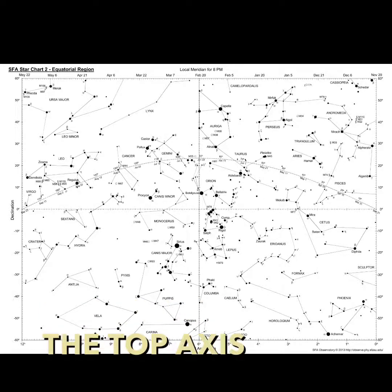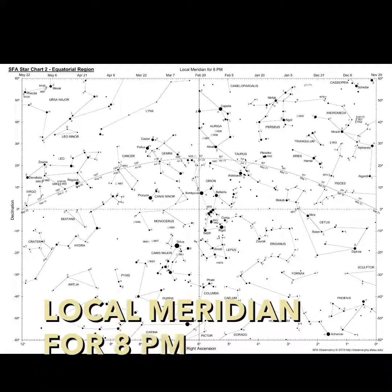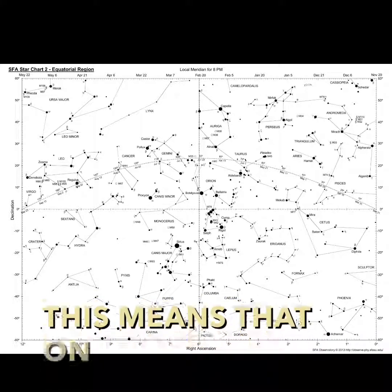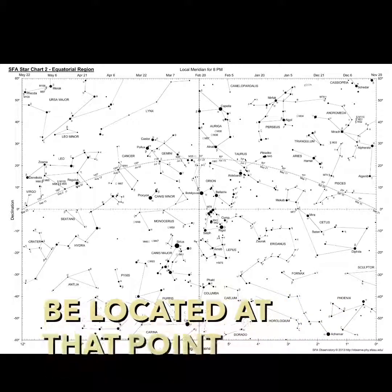The top axis of the chart shows the local meridian for 8 pm. This means that on those dates the meridian will be located at that point on the chart.